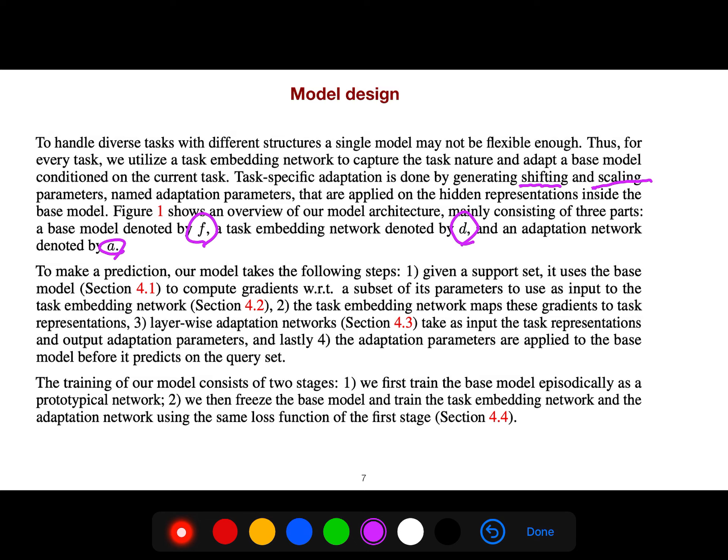We have two stages for our training. First, we train the base model episodically, just like ProtoNet. Then we freeze the base model and train the task embedding and the adaptation network using the same loss function.